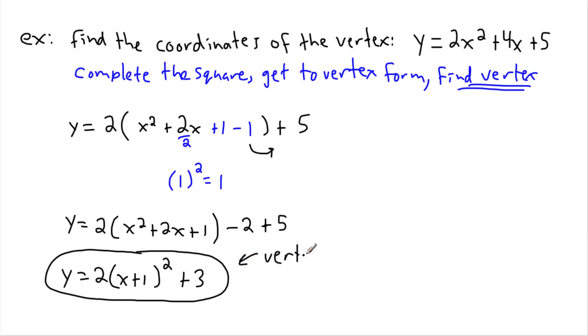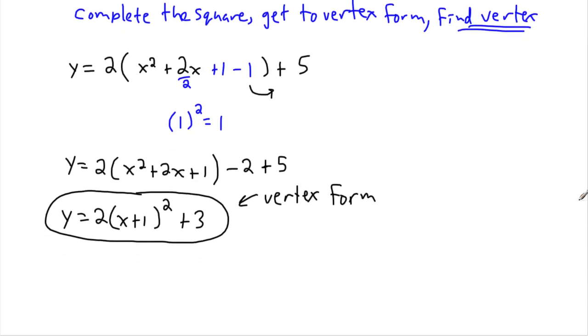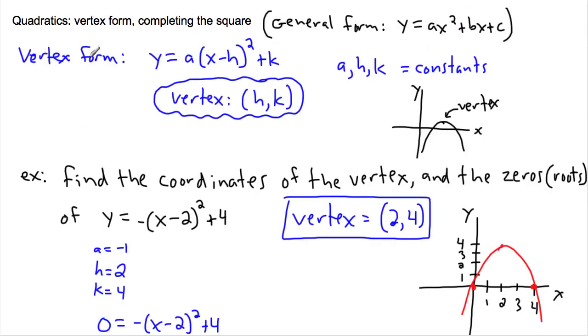This is in vertex form, which is extremely useful, because now I can tell without any problems what the vertex is. The vertex is just h, k. Remember, if we go back to our previous videos, we were looking at this right here in vertex form. If it goes x minus h squared plus k, then the vertex is just h, k. In other words, if this is a minus here, then your vertex is just whatever that number was. That's the x value. And then the y value will be the k.